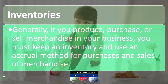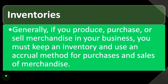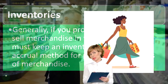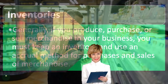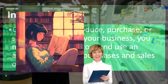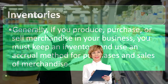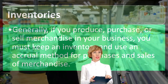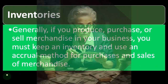Continuing on inventories: generally, if you produce, purchase, or sell merchandise in your business, you must keep an inventory and use an accrual method for the purchase and sale of merchandise. As discussed, inventory is often an issue because putting it on the books as an asset — instead of expensing it when you pay for it — is an accrual thing. Recording the expense as cost of goods sold when you sell the inventory, rather than when you bought it, is also an accrual-type action. We want to match up the revenue generated from the sale of inventory with the cost of goods sold.